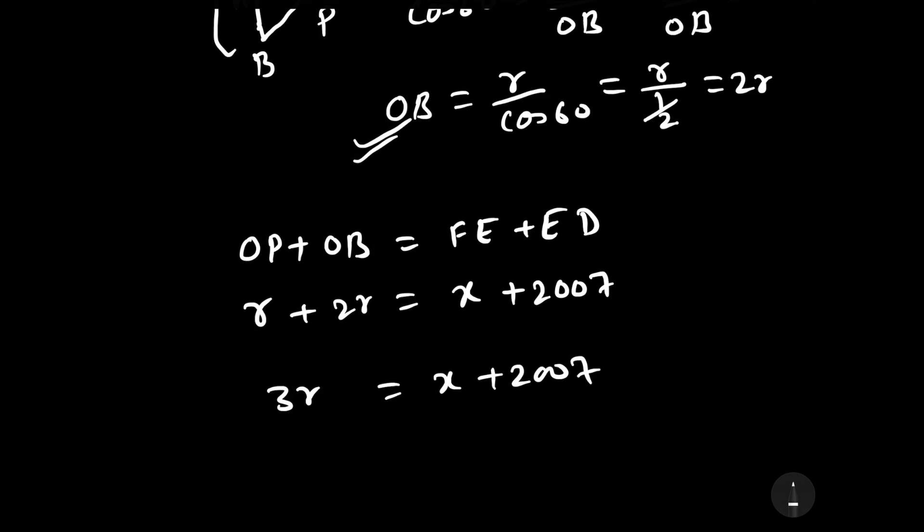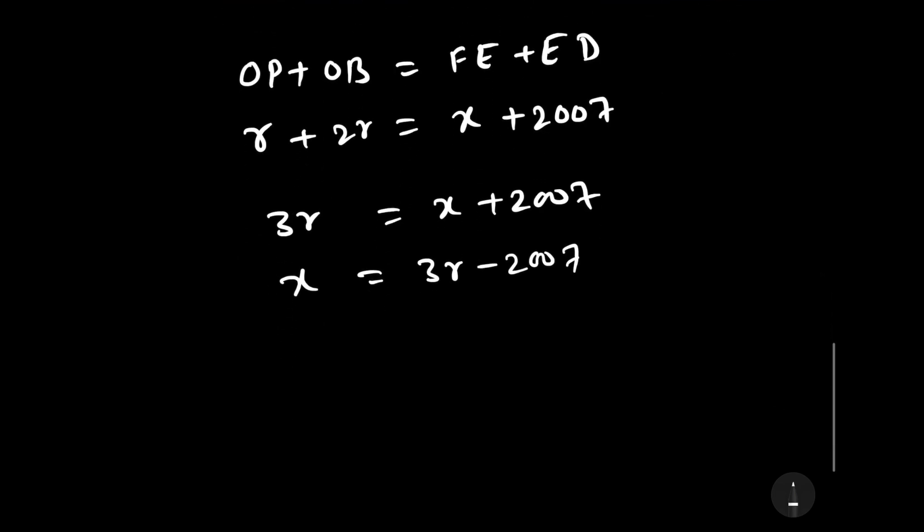From here we can find the value of x as 3R minus 2007, but the value of R is not given, the value of diameter is given. We know that the relation between diameter and radius is diameter equals 2R. Hence, R is equal to diameter upon 2.